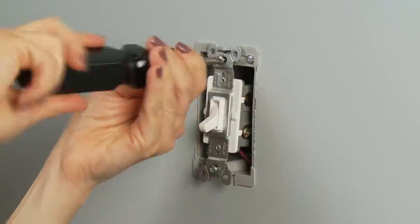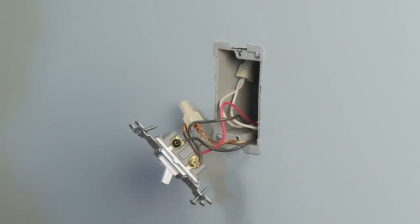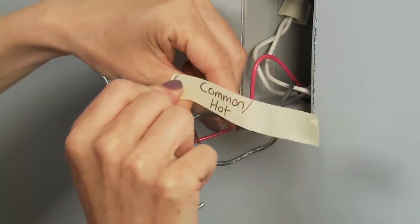Next, unscrew your old device from the wall box, which should leave it only connected to the wall box by the wires. Before removing the wires from the device, make sure to label the wires.